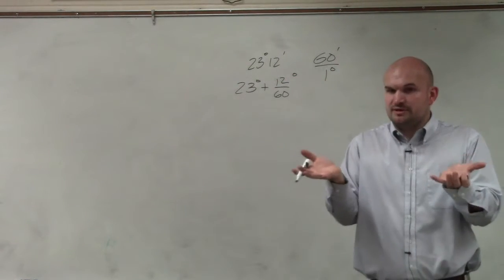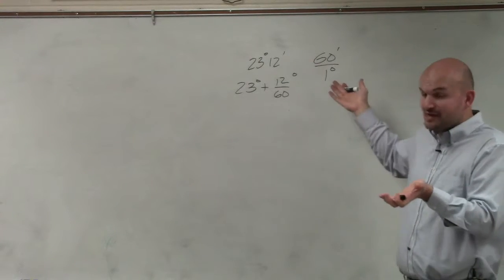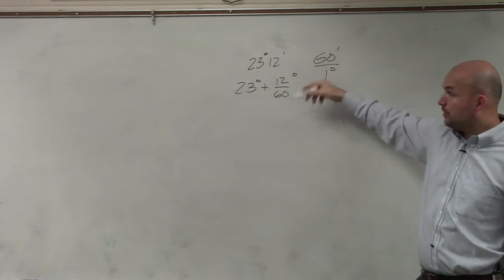It's a portion of a degree, right? It's not 60 of them, because if you had 60 minutes in a degree, you would have a full degree. You have a portion. So it's 12 out of 60.